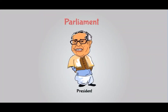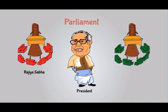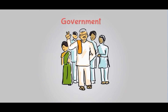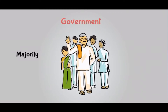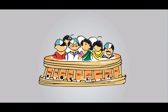The Parliament consists of the President of India and two houses: the upper house, which is the Rajya Sabha or the Council of States, and the lower house, which is the Lok Sabha or the House of People. The government is formed by the party who gets more than half the seats and majority votes after the general election of Lok Sabha. Members of both these houses are called Members of the Parliament, or MPs.